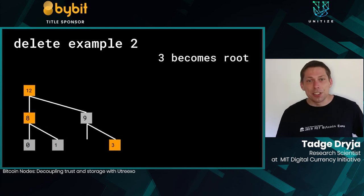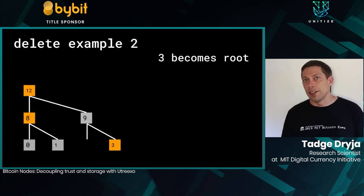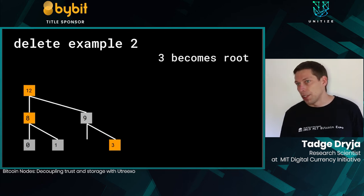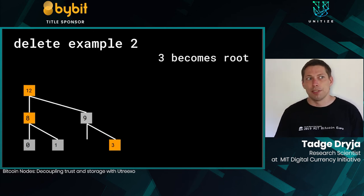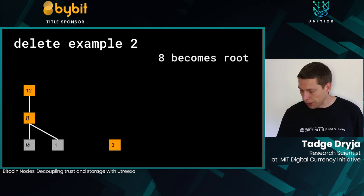You can batch these deletions together and it's quite efficient. You always have log(n)/2 roots, which ends up being a few hundred bytes — always less than a kilobyte with the current Bitcoin UTXO set. Even if you reached four or eight billion UTXOs, you would never exceed a kilobyte of storage space.